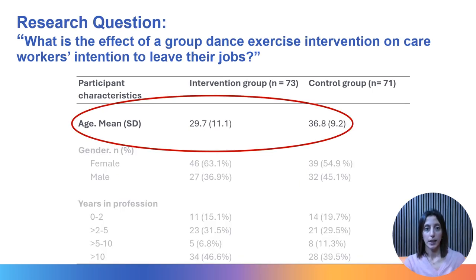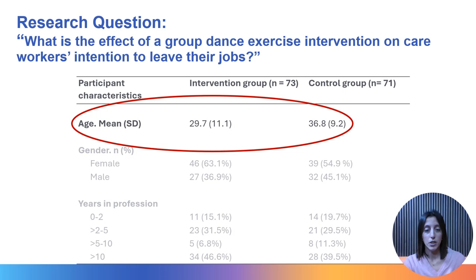Let's have a look at the first characteristic: age. The mean age of the intervention group is 29.7, which is lower than that of the control group at 36.8. Should we be worried about this difference in mean age? Not necessarily, but it's important to keep in mind when reading about the effectiveness of the dance exercise intervention. Could the fact that participants in the intervention group tend to be younger influence their willingness to take up the intervention? Between brackets you see the standard deviation — a measure of dispersion that tells us the average amount by which data deviate from the mean. We can see that these values are similar.